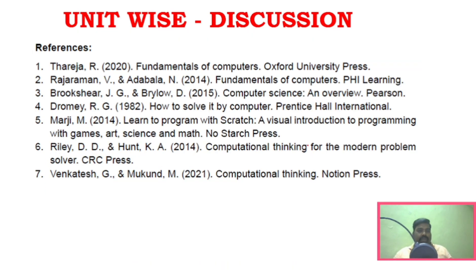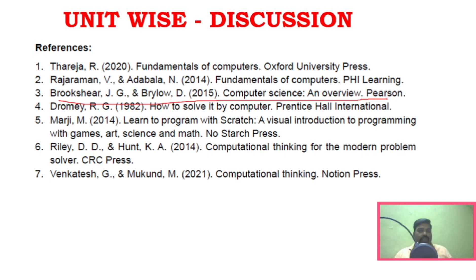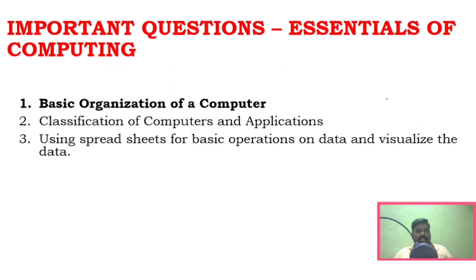Now we will see the question-wise discussion. A recommended reference book is Brookshire's 'Computer Science: An Overview' — a downloadable link is available in the description and it will be very useful. For Unit 1, the basic organization of computer is a very important question. Classification of computers and applications, and using spreadsheets for basic operations on data and visualizing data — this is scenario-based content you should be familiar with.